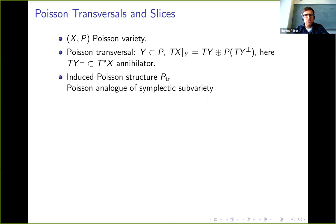This comes with a natural Poisson structure. It's the Poisson analog of symplectic subvariety in symplectic geometry. But it's not a Poisson subvariety. The point is in a symplectic variety, the only Poisson subvarieties are open subsets.